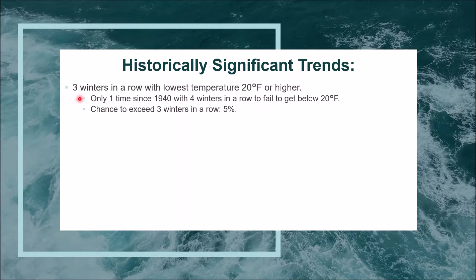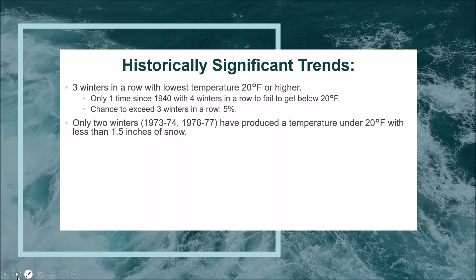Historically significant trends: we've experienced three winters in a row with the lowest temperature failing to get below 20 degrees. With 55 percent of winters getting below 20 degrees, there's approximately a five percent chance we will exceed this streak — it has only happened one time since 1940. So the odds are we will get below 20 degrees regardless of any other factor. Only two winters have produced a temperature under 20 degrees with less than 1.5 inches of snow.